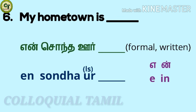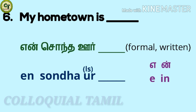To answer 'my hometown is...': 'en sondhoor [place name]'. Put your hometown name in the empty space. This is in the formal written form. For 'en': 'a' a short vowel, 'in' a consonant. Together: en. En sondhoor. In the colloquial form, there is no difference in this sentence, so you can use the same.